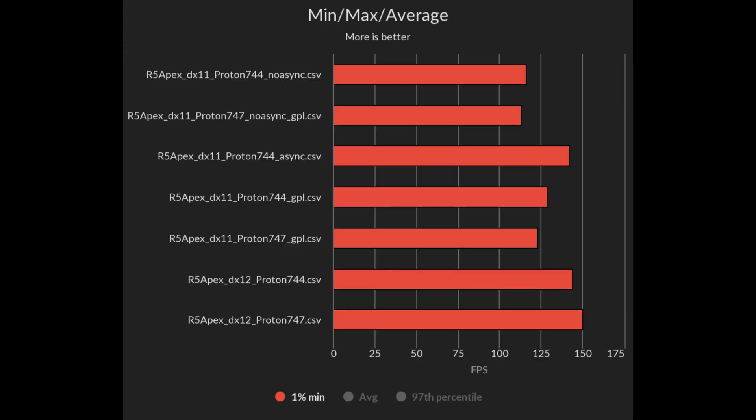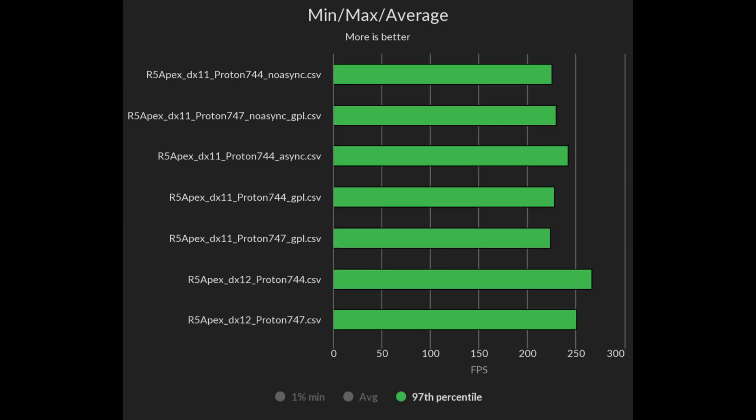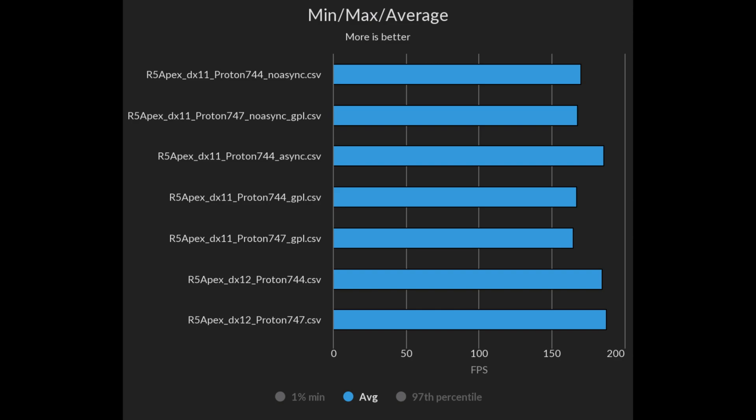When it comes to 1% lows, DX12 and async beat GPL, with no async or GPL performing the worst of the bunch. Looking at the 97th percentile, it's a familiar story, except GPL and having no async or GPL is much closer to each other. When we look at the average FPS, DX12 and async are on equal footing, with no async and GPL being equal. This shows that async and GPL are performing the job they were set out to perform, which is reduced stuttering.